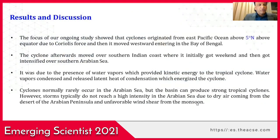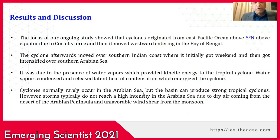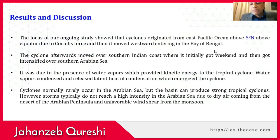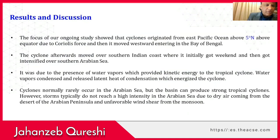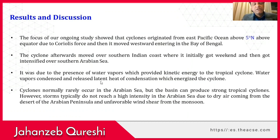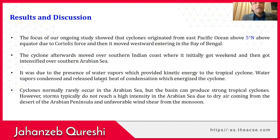Results and discussions. The study showed the cyclone originated from the east Pacific Ocean, above 5 degrees north of the equator. It took force and moved westward, entering the Bay of Bengal, then moved over the southern Indian coast where it initially weakened and then intensified over the southern Arabian Sea. This was due to the presence of water vapors that provided kinetic energy — water vapors condensed, releasing latent heat of condensation, which energized the cyclone.